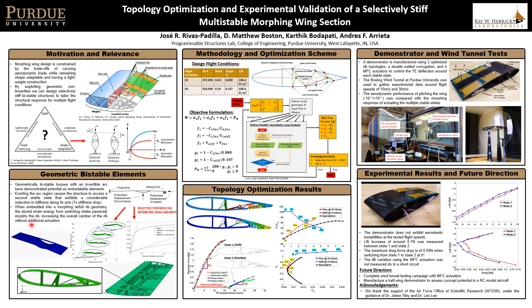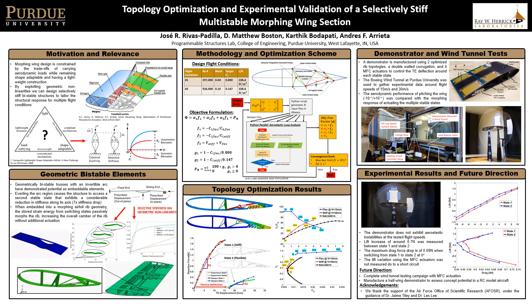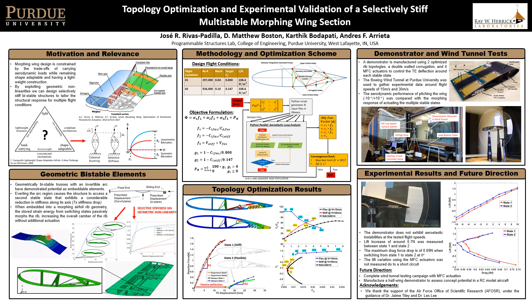Geometrically bistable trusses with an invertible arch have demonstrated potential as selectively stiff bistable embeddable elements. By everting the arch region of the truss, the structure switches to a second stable state that exhibits a considerable reduction in stiffness when loaded along its axis.